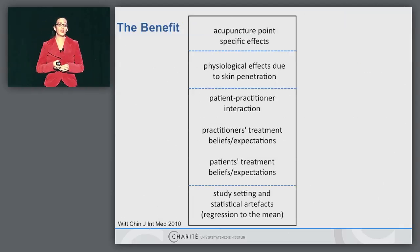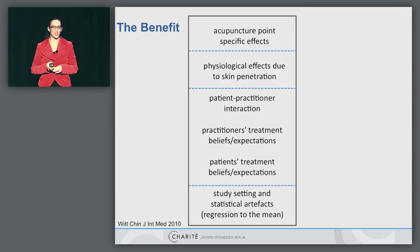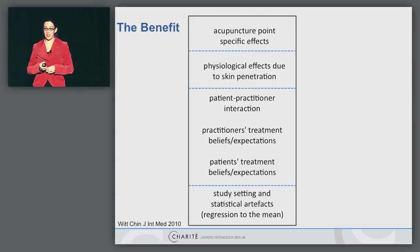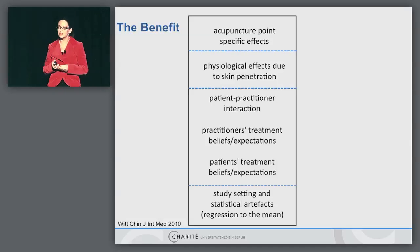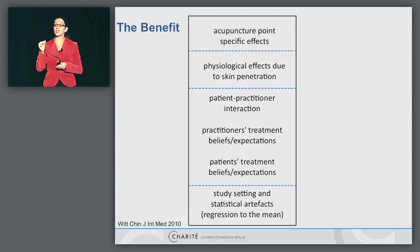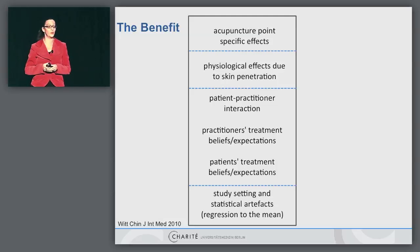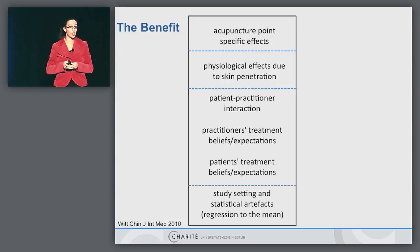Before I move into the evidence on efficacy and effectiveness, let me talk a little bit about the benefit we measure in patients. When we measure an outcome, we include a lot of different aspects: aspects of the study setting, statistical artifacts like regression to the mean, the whole area of non-specific effects including expectation, beliefs, and the interaction of patient and practitioner. Then, due to the fact that we penetrate the skin and even rotate the needles manually, as you have seen in the video by George Lewis, we also have physiological effects. And last but not least, we have acupuncture point-specific effects.